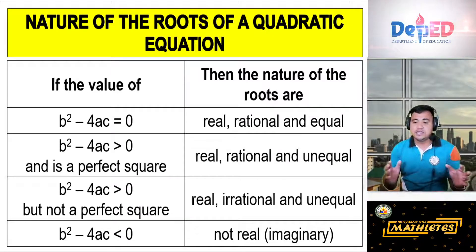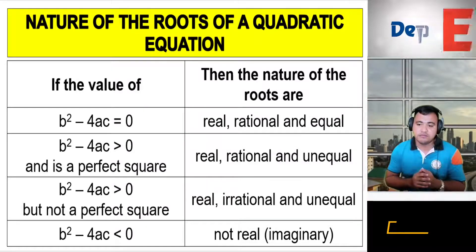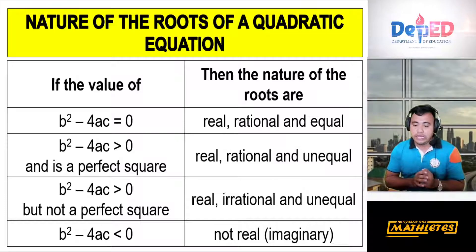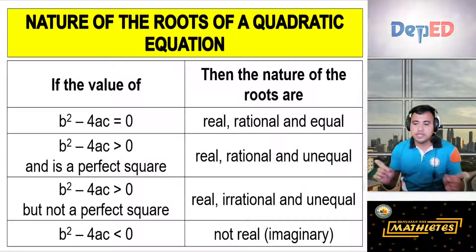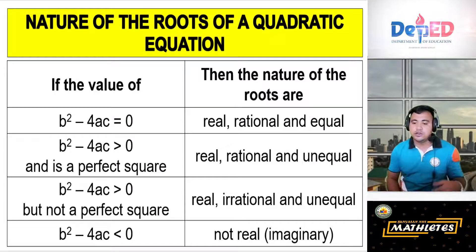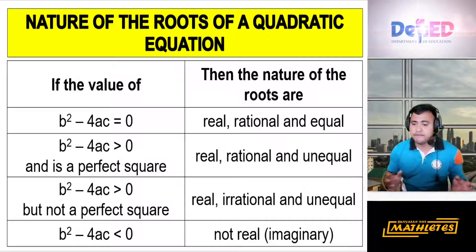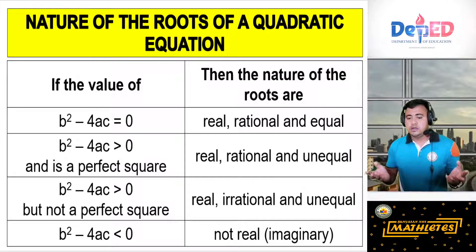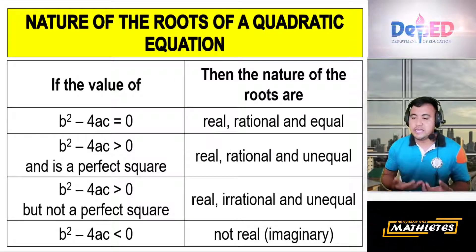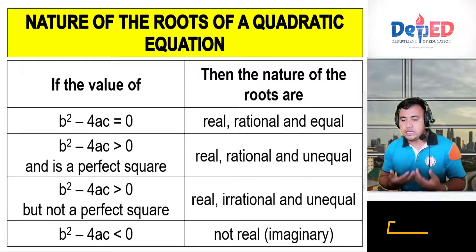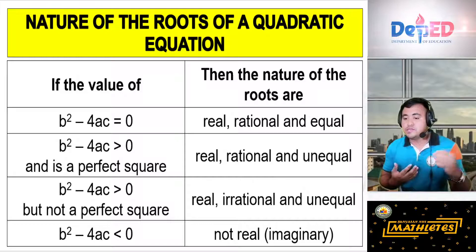If the discriminant is greater than 0 and is a perfect square, the nature of the roots is real, rational, and unequal. If the discriminant is greater than 0 but not a perfect square, the nature of the roots is real, irrational, and unequal. The difference is that a perfect square gives rational roots, while a non-perfect square gives irrational roots.